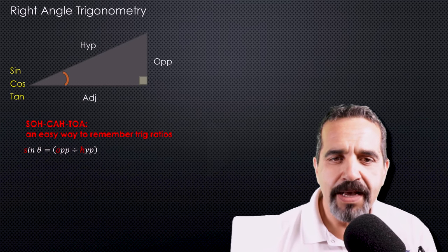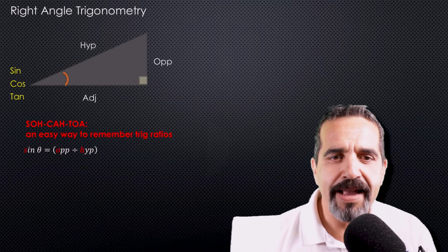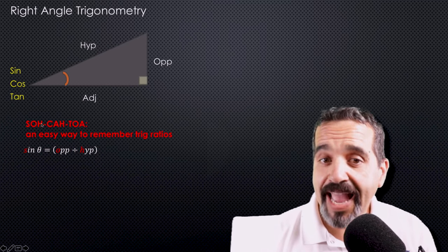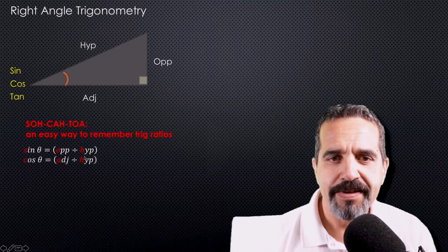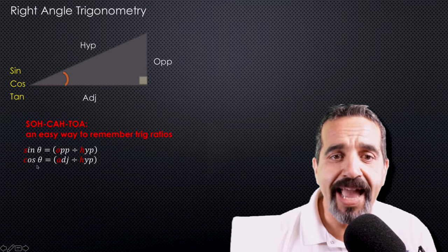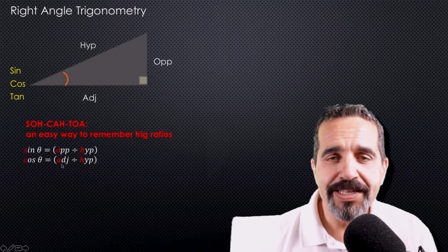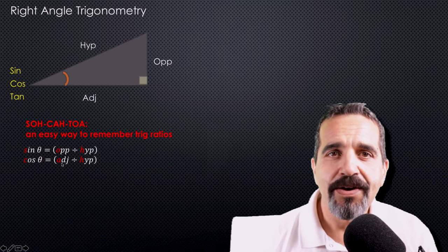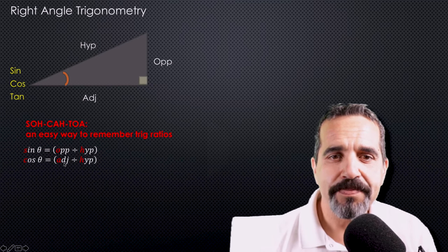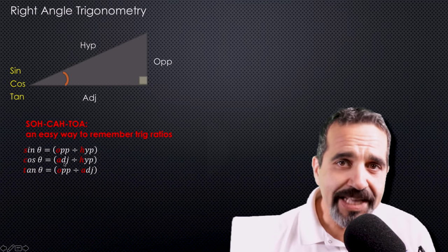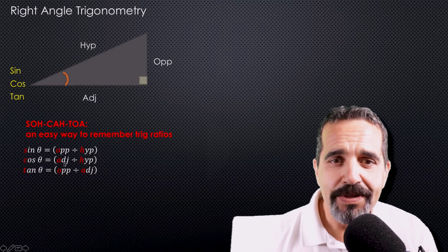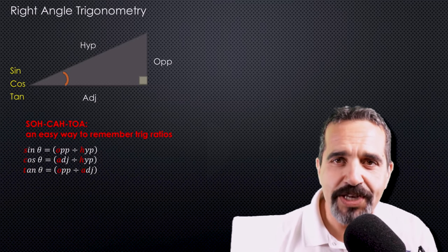So to recap: the sine of the angle equals the opposite over the hypotenuse. The cosine of the angle equals the adjacent over the hypotenuse. And the tangent of the angle equals the opposite side over the adjacent side.